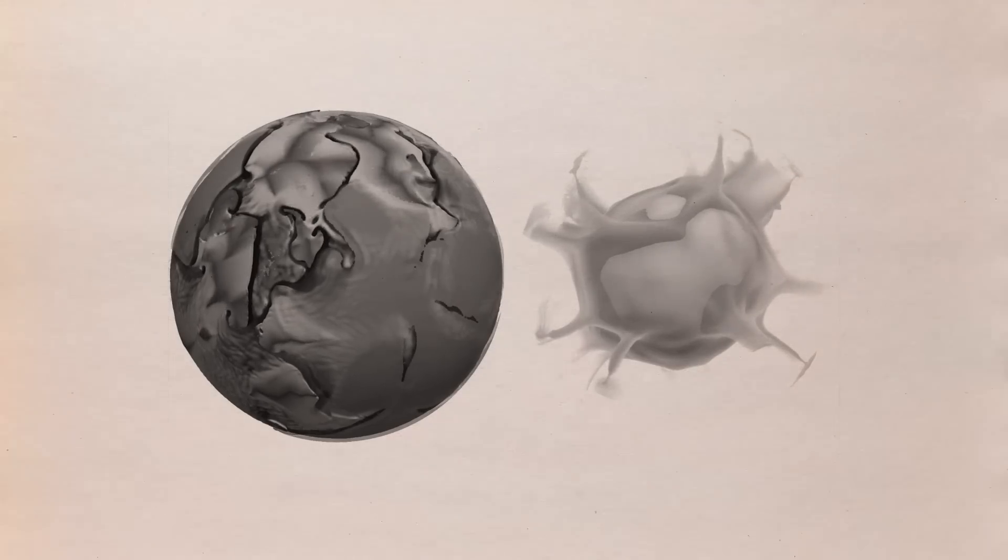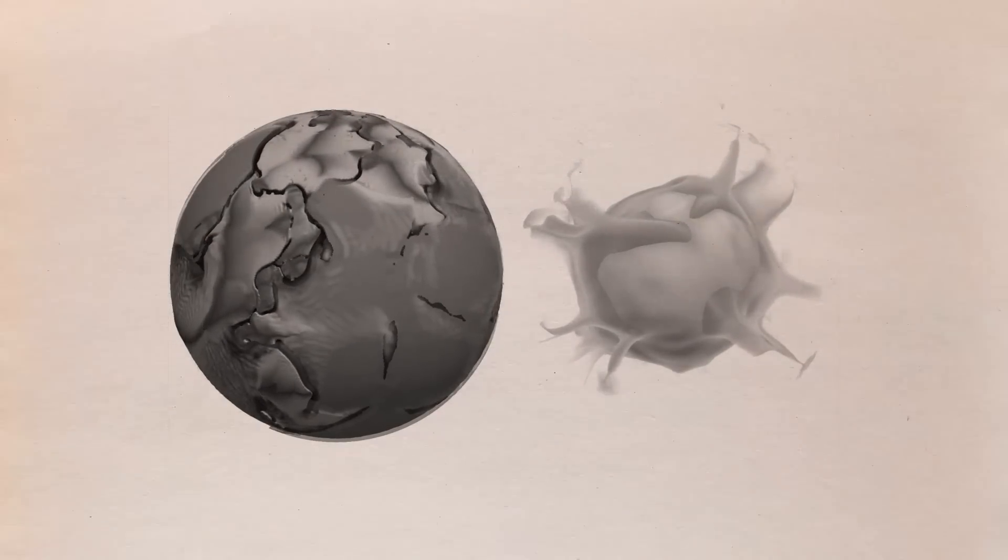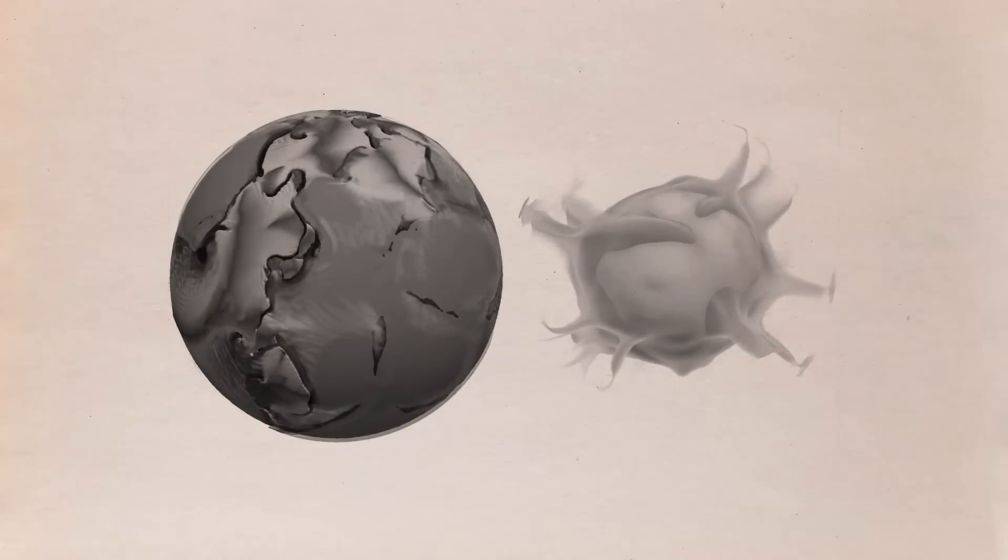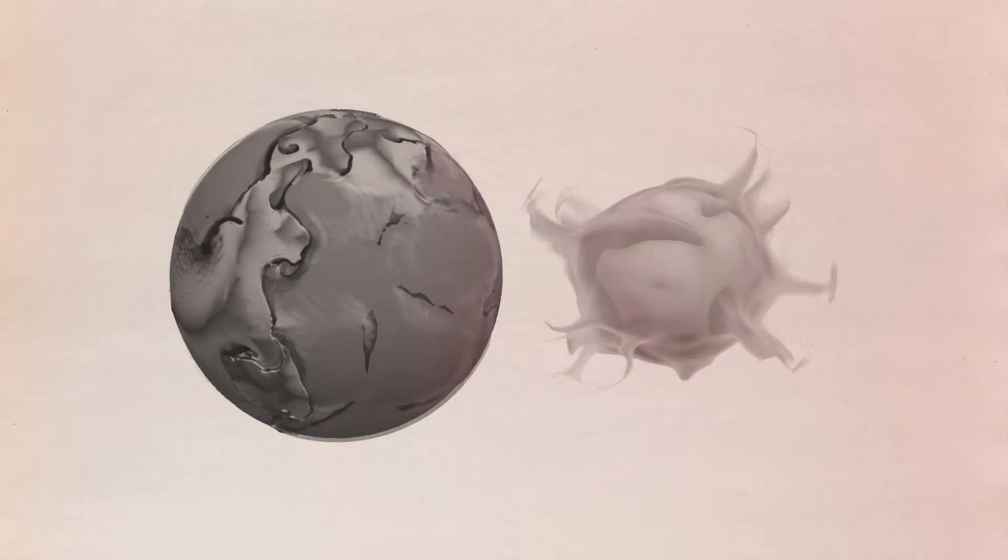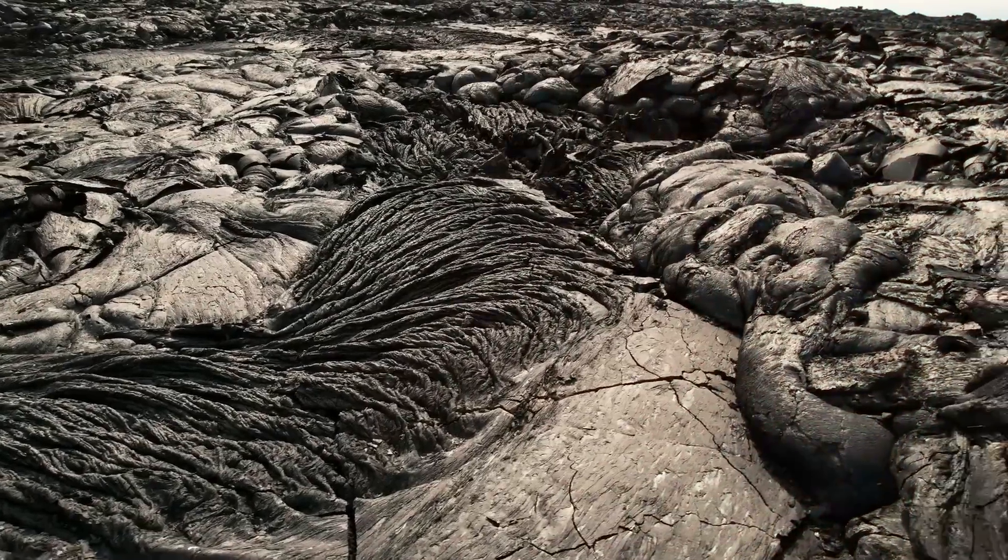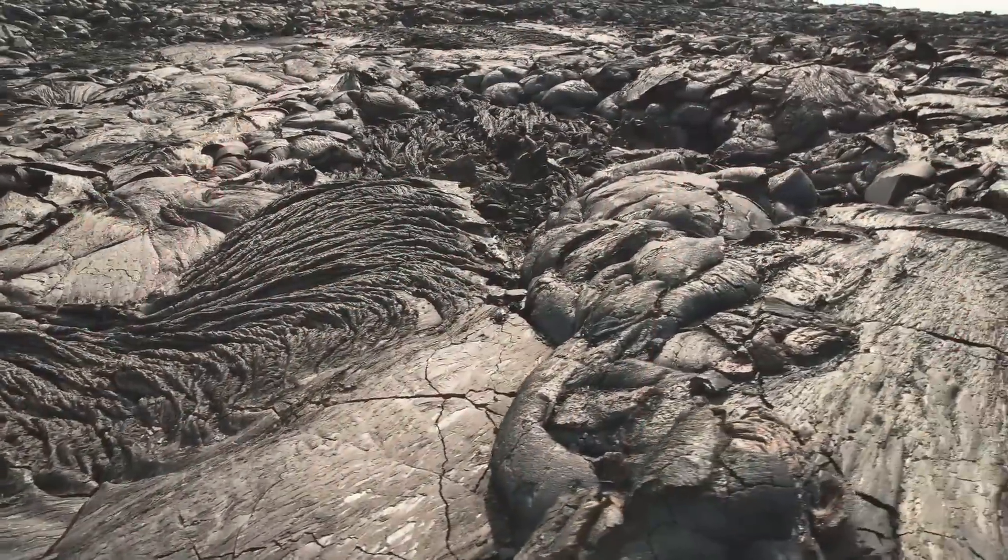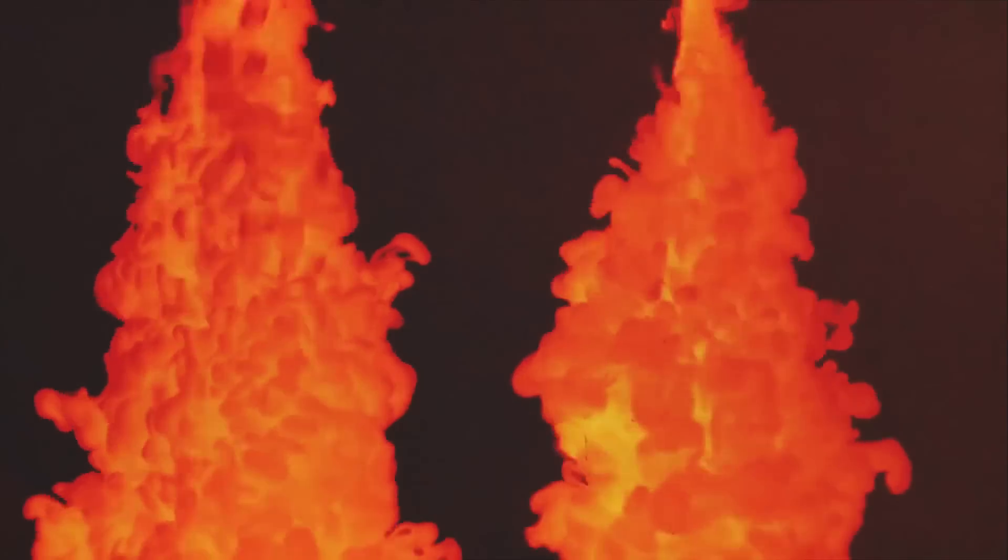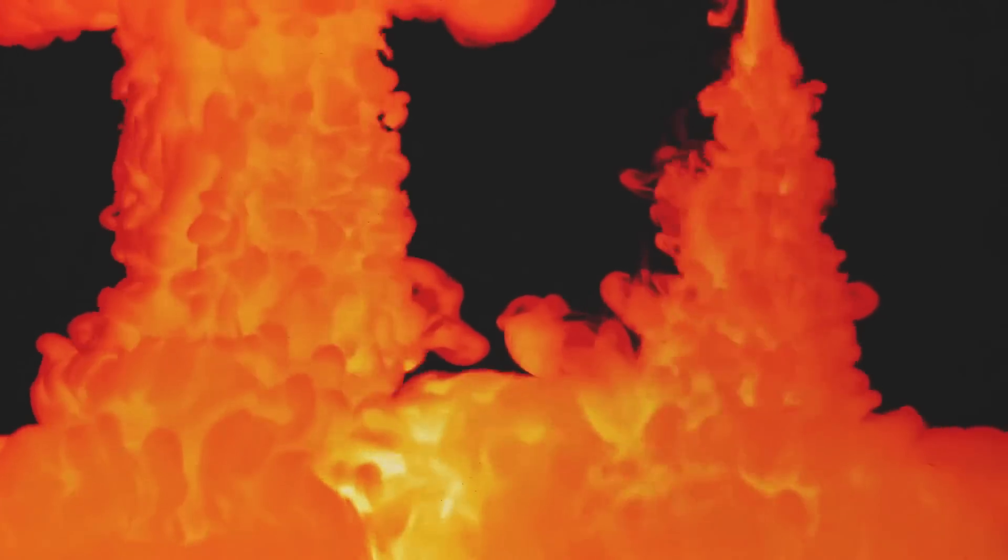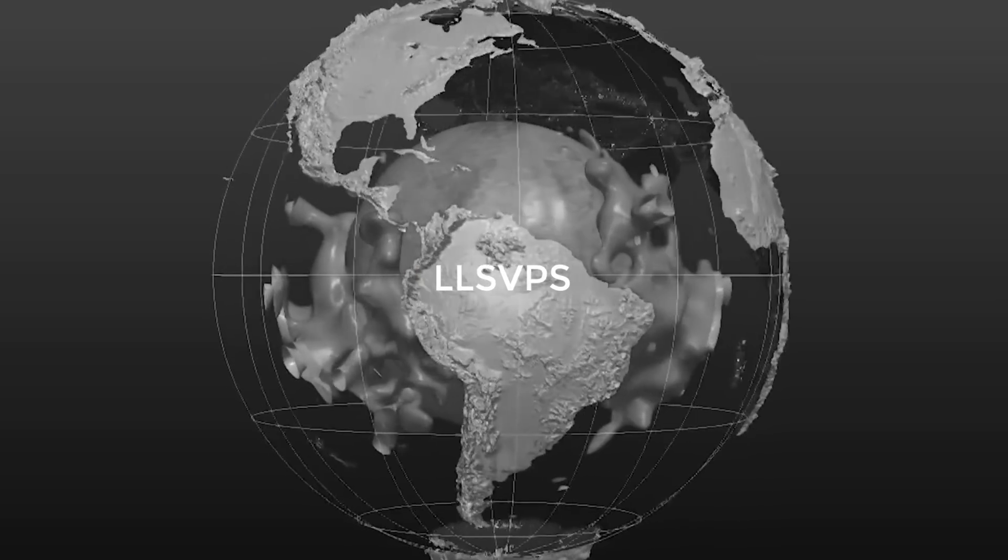For the longest time, scientists have speculated that the blobs could be millions of years old, dating back to a time when the Earth was still forming and the mantle, which is now comprised of solid rock, contained a vast ocean of molten magma. Some areas of this layer retained contaminants that had been mixed in when it was still a liquid. All these years later, they have remained in place, and together they now make up the odd LLSVPs.